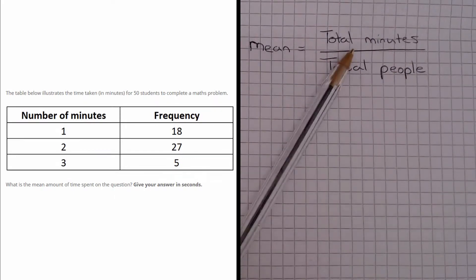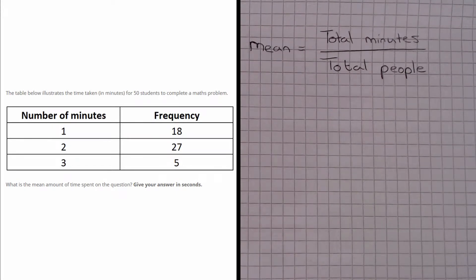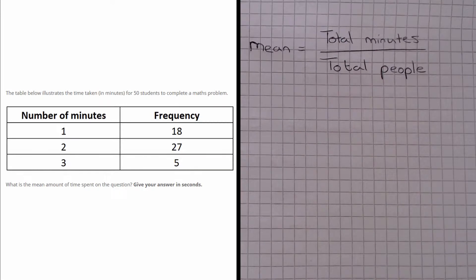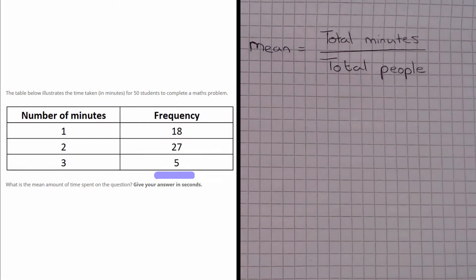So we need to find the total number of minutes and the total number of people. Now we are given that the total number of people is 50 in the question, but we could easily find this anyway just by summing up all the values in the frequency column. So how do we find the total number of minutes?